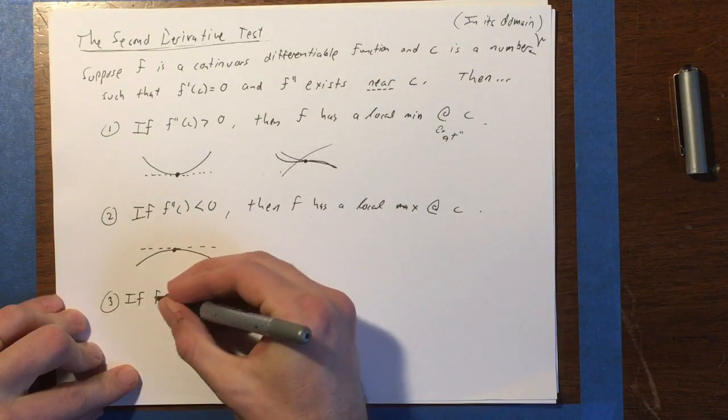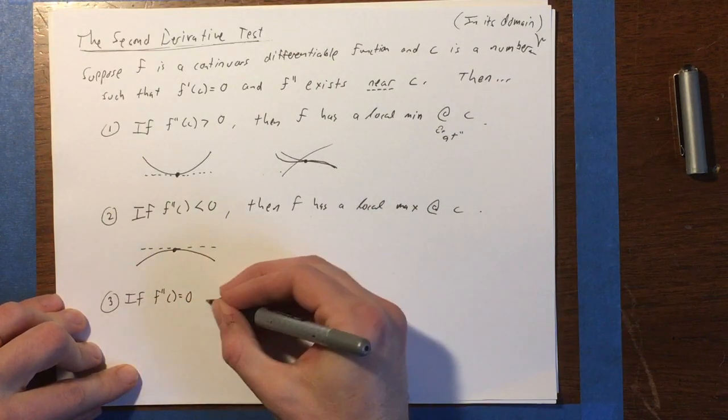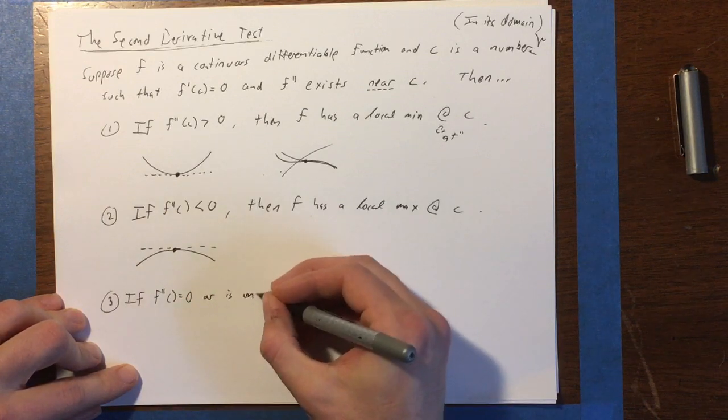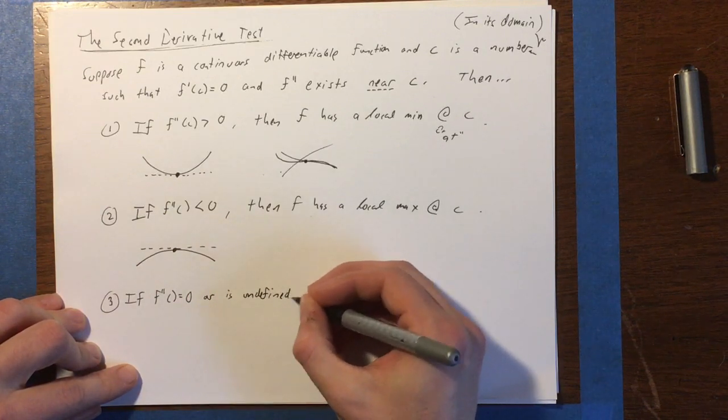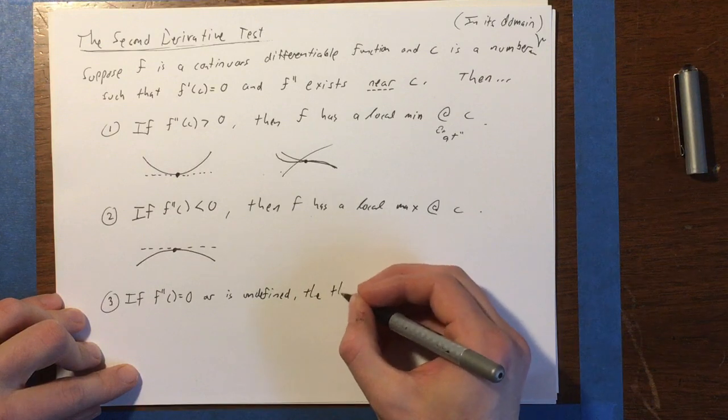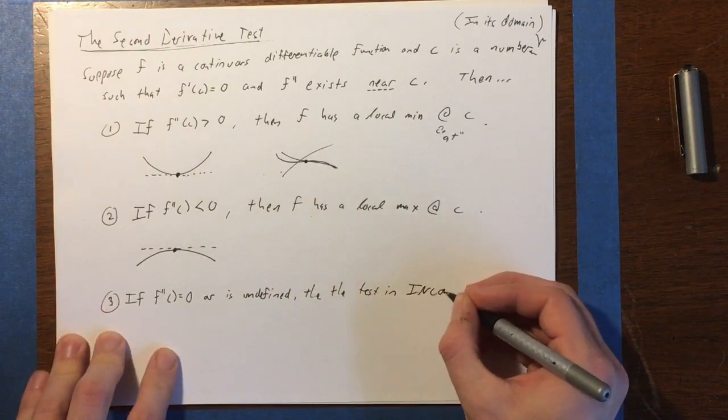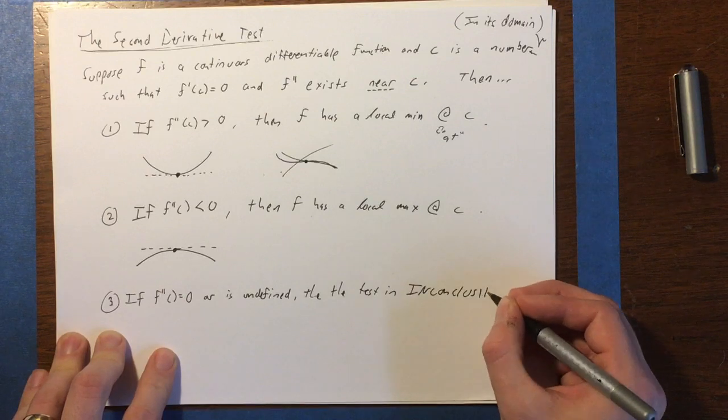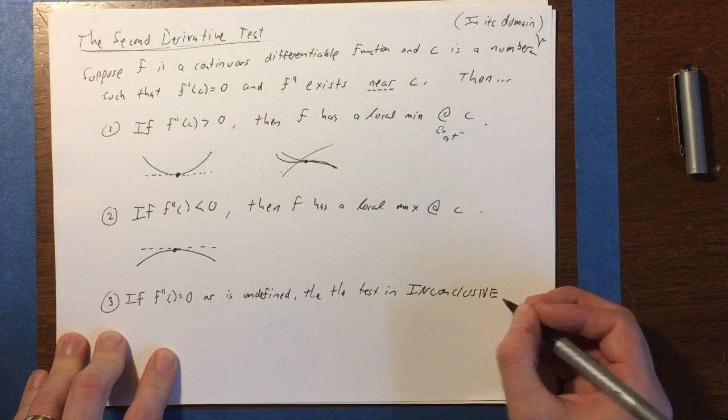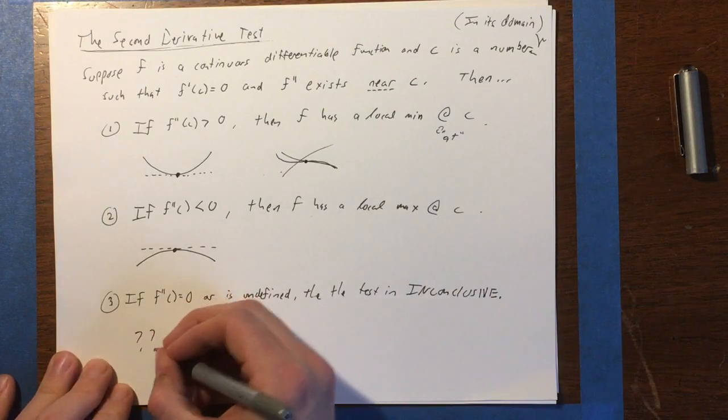If f double prime of c equals zero or is undefined, then the test is inconclusive. Which means you have no information. You really don't know what's going on.